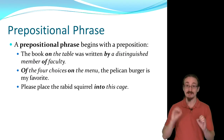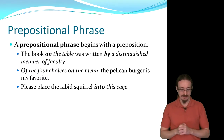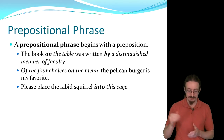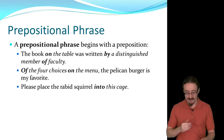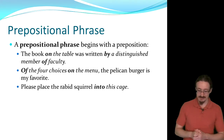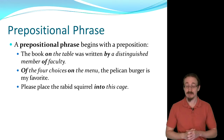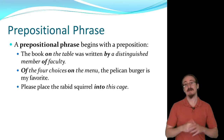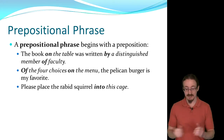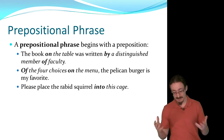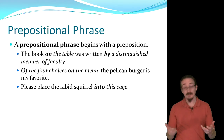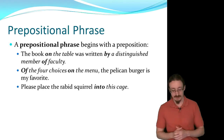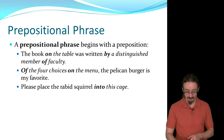What follows a preposition is usually some type of noun. For example, 'the book on the table' — on is the preposition, and the table is the object of that preposition. 'The book on the table was written by a distinguished member of faculty.' Notice there are no commas there because it's easy to read. But 'of the four choices on the menu, the pelican burger is my favorite' — you have to put a comma in because the phrase comes before the rest of the sentence. 'The pelican burger is my favorite' is the independent clause. 'Please place the rabid squirrel into this cage' — this cage is the object of the preposition into.